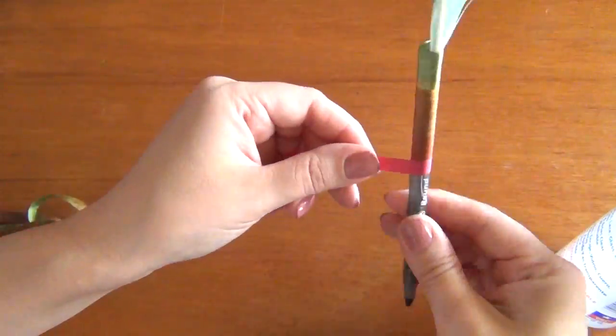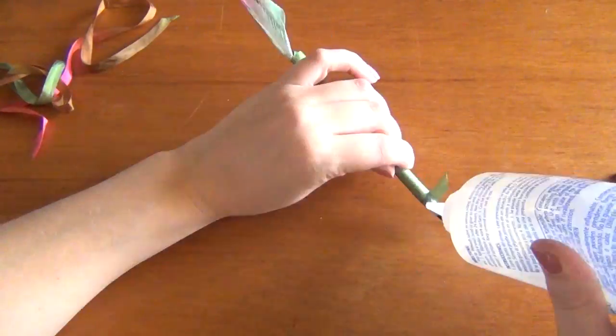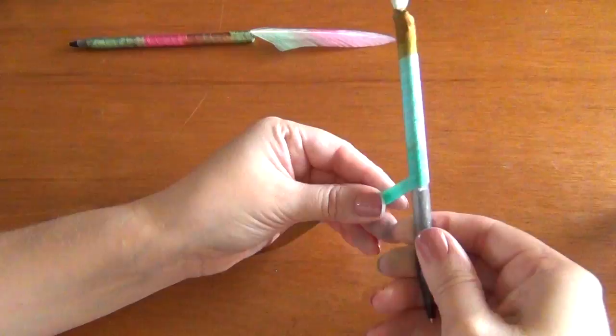Use your Fabri-Tac as you go and smooth it out until you get to the very bottom, then cut it at a diagonal and finish wrapping it around the pen.